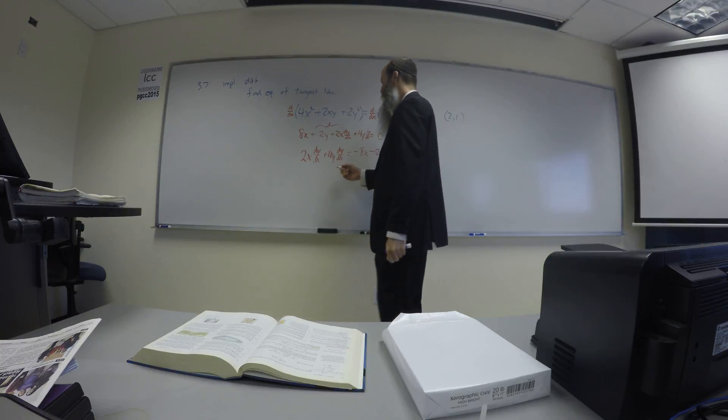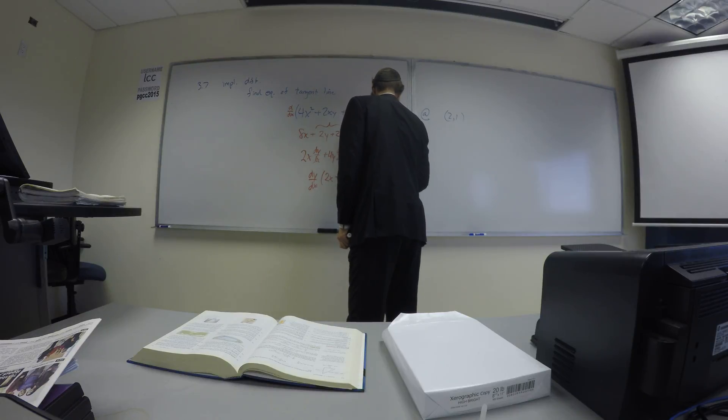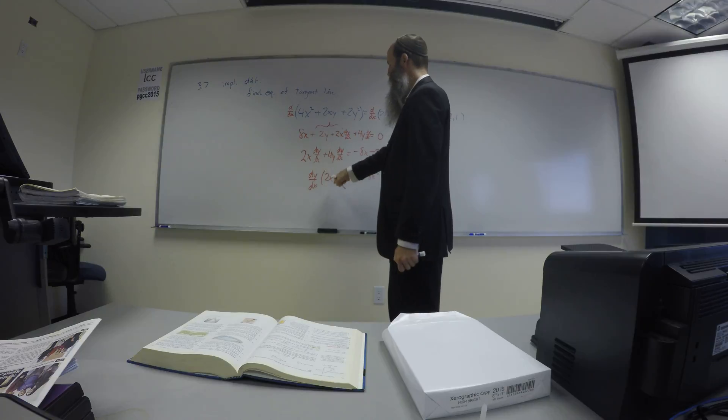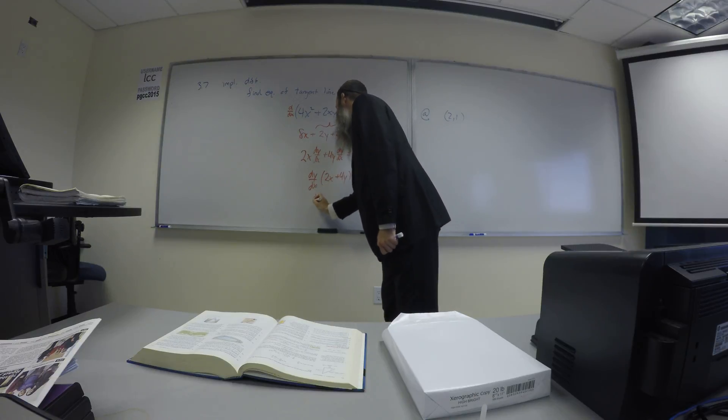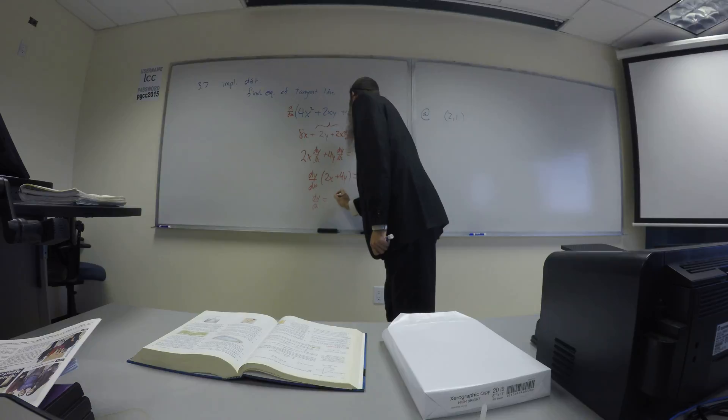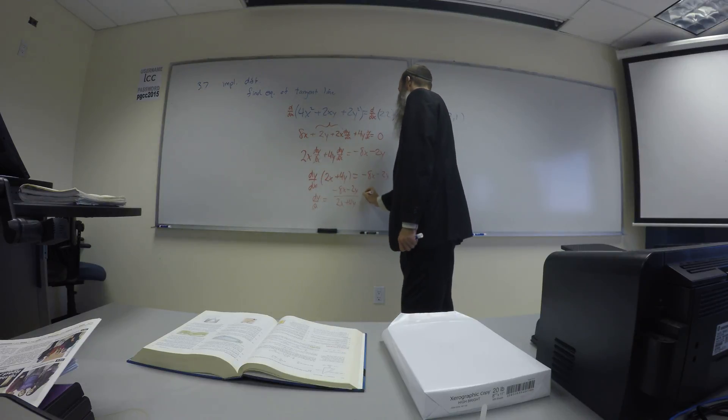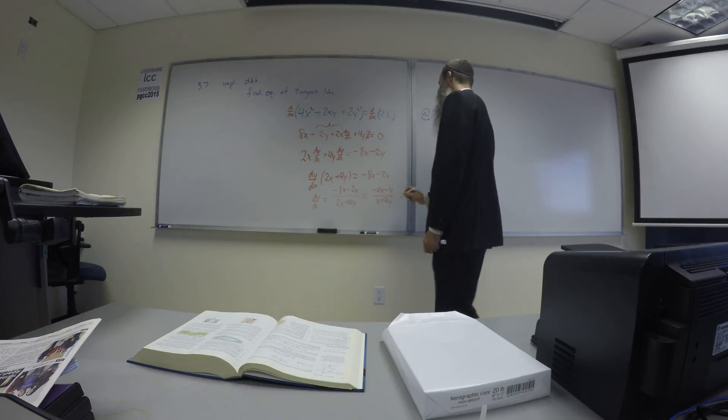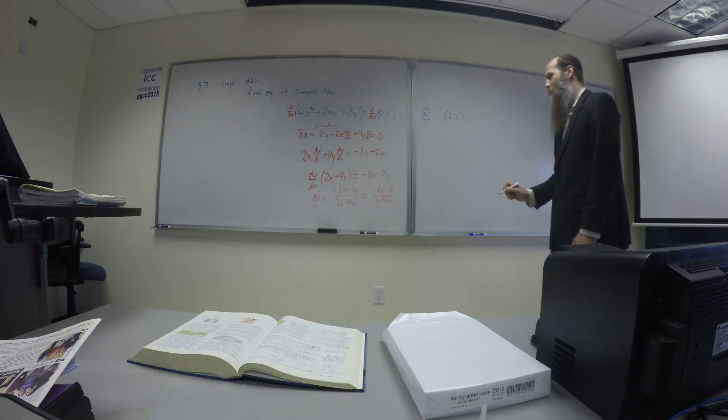Now we need to factor out the dy dx. So if we take the dy dx, the thing we're trying to find, from both of these terms, we'll have 2x plus 4y left over on the left. And the right stays the same. Now we just divide off by this factor here. So we get dy dx, negative 8x minus 2y over 2x plus 4y. Everything has a 2, so we'll take out the 2, so that really equals negative 4x minus y over x plus 2y. There's our simplified form.